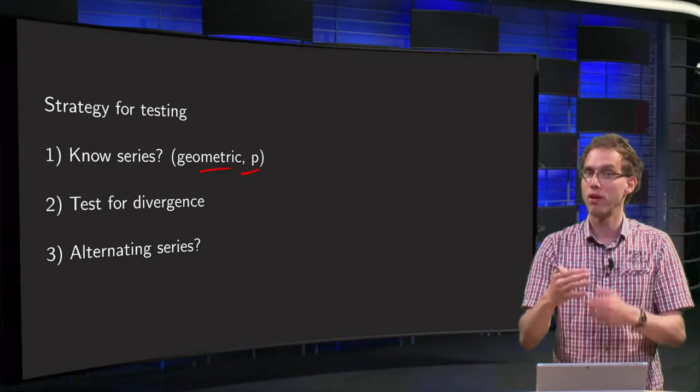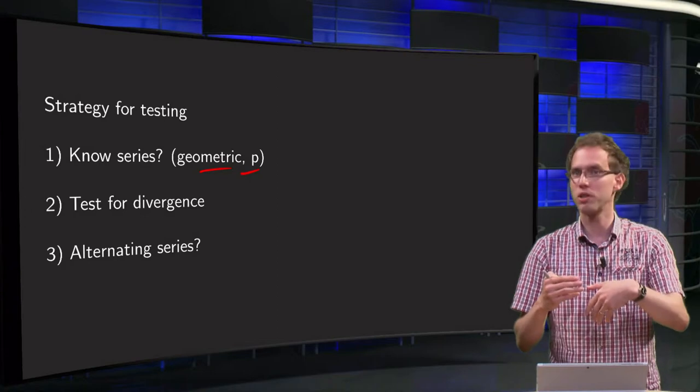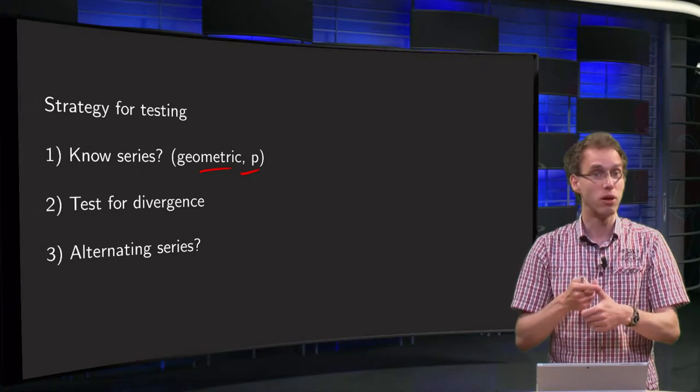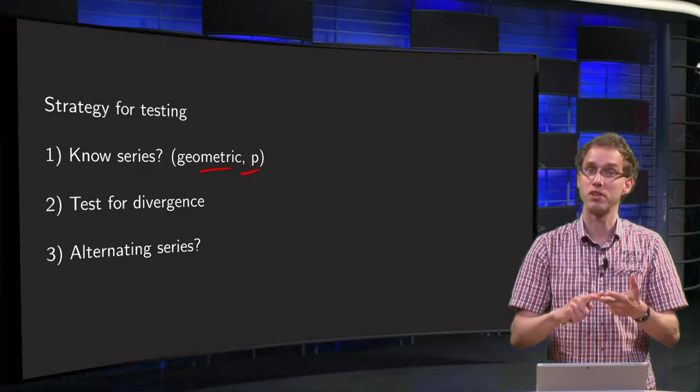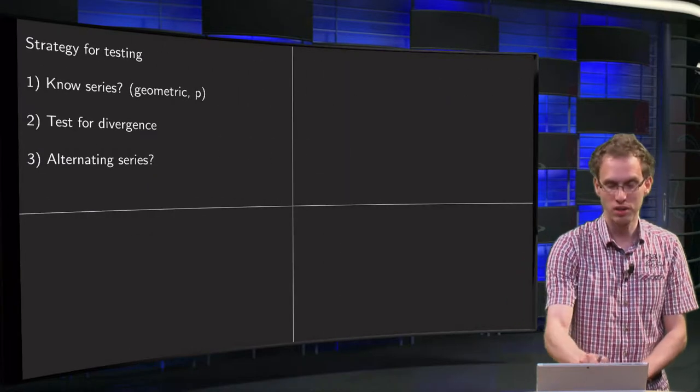And third thing to do, do you have an alternating series. Firstly you can see that straight away: known series, terms not tending to zero, or alternating series. If that is not the case,